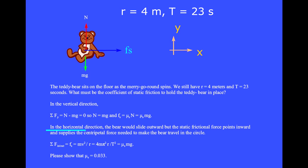In the horizontal direction, the bear would slide outward, but the static frictional force points inward and supplies the centripetal force needed to make the bear travel in a circle. The sum of the inward and outward forces equals plus fₛ equals Mv² over R. We'll use the form 4mπ²R over T², since we know R and T. The static frictional force equals μₛ times Mg, and after canceling the m, please show that μₛ equals 0.033.